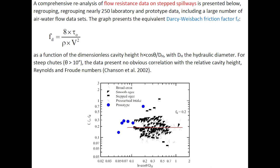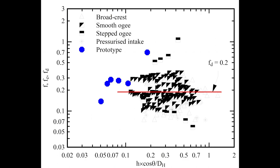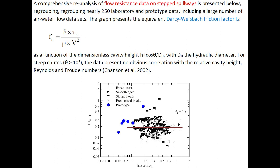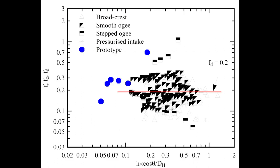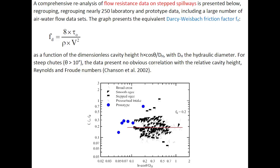A comprehensive reanalysis of flow resistance data on step spillways is presented on this graph, regrouping nearly 250 laboratory and prototype data points, including a large number of air-water flow datasets. The graph presents the dimensionless boundary shear stress in the form of a Darcy-Weisbach friction factor as a function of the dimensionless cavity height, where dh is the hydraulic diameter. For steep chutes, the data present no obvious correlation with the relative cavity height, Reynolds number, or Froude number.